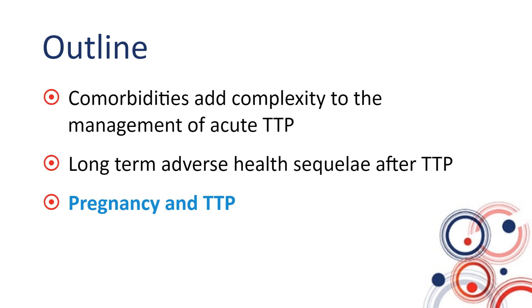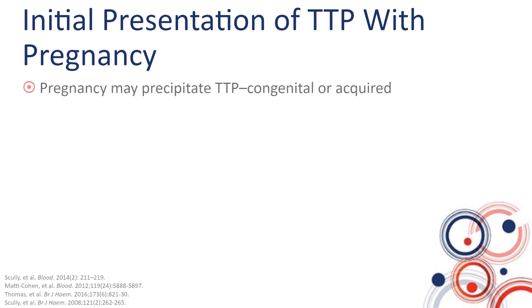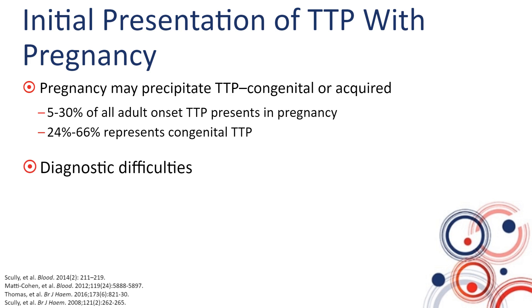Coming to pregnancy and TTP: pregnancy may be when TTP initially presents, for both congenital and acquired TTP. Up to 5 to 30% of all adult-onset TTP presents for the first time during pregnancy, and of those presenting during pregnancy, between 24 to 66% represent congenital TTP. Although congenital TTP is very rare, it commonly presents for the first time in pregnancy — individuals don't always present in childhood. This creates diagnostic difficulties for both congenital and acquired TTP.